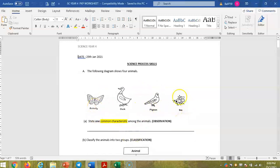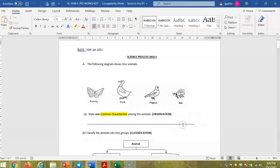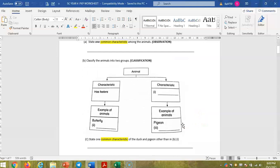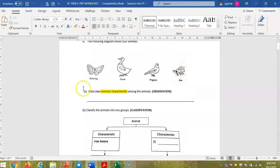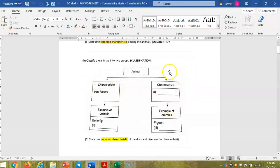So A, state one common characteristic among the animals. So you can observe the animals and identify the common characteristic here. Okay, then for B, is the activity for classification. Okay, what you are going to do is you are going to classify the four animals into two groups. So you need to find two characteristics.